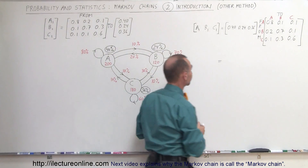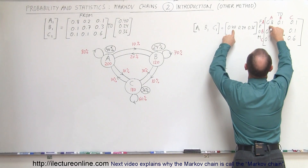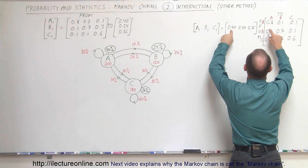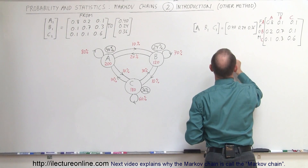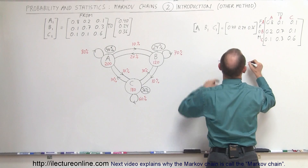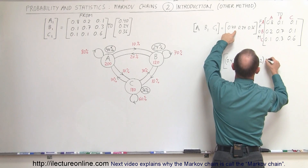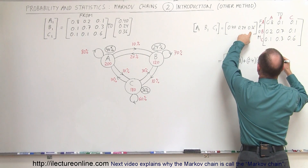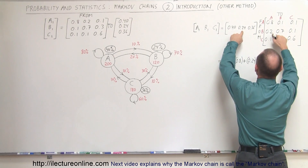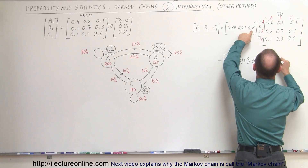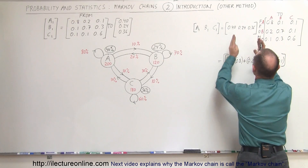So now let's go ahead and work it out. For the first cell right here, this is equal to 0.4 times 0.8 — we multiply this times this to get the first cell. That would be 0.4 × 0.8 plus 0.24 × 0.2 plus 0.36 × 0.1, and that will be the first element of this matrix.